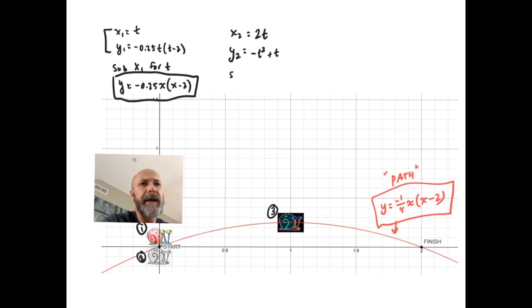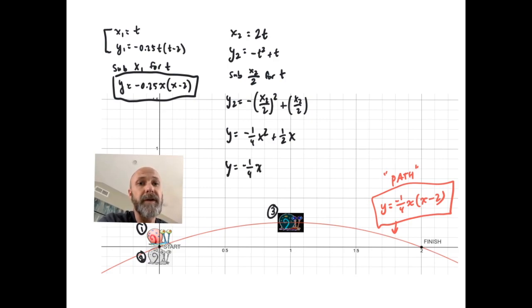Okay, so I can show here through substitution that it'll follow the same path, but in this case I'll have to solve the first x₂ equation for t, and that'd be x₂ divided by 2, and then I'd sub in x₂/2 where I see a t in the y₂ equation. And of course I can drop the subscripts again, so this will just say y = -1/4 x² + 1/2 x.